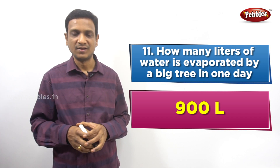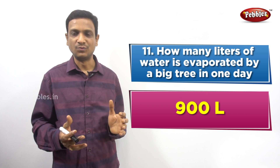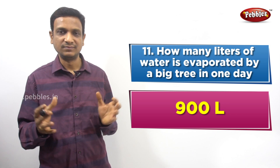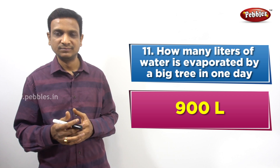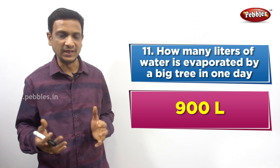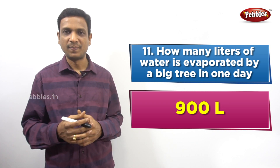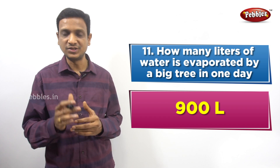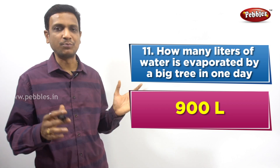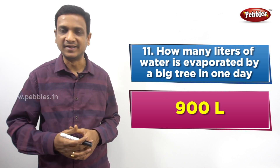Plants are responsible for this evaporation and play a major role in the water cycle - this is why there is more rainfall in areas with more forest. Transpiration also helps pull water against gravity, aiding the circulation of water throughout the tree. So the answer is approximately 900 liters, as per the textbook - this is an approximation for a big tree.